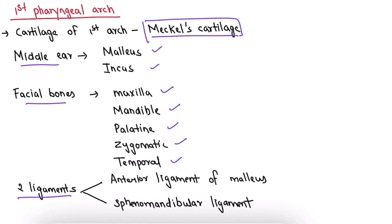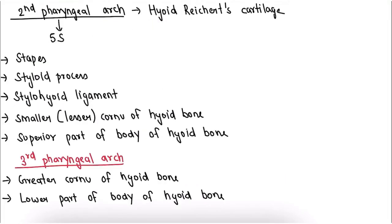Facial bones like maxilla, mandible, palatine, zygomatic, and temporal are all derived from the first pharyngeal arch. There are two ligaments derived from the first pharyngeal arch: the first one is the anterior ligament of malleus, and the second one is the sphenomandibular ligament.